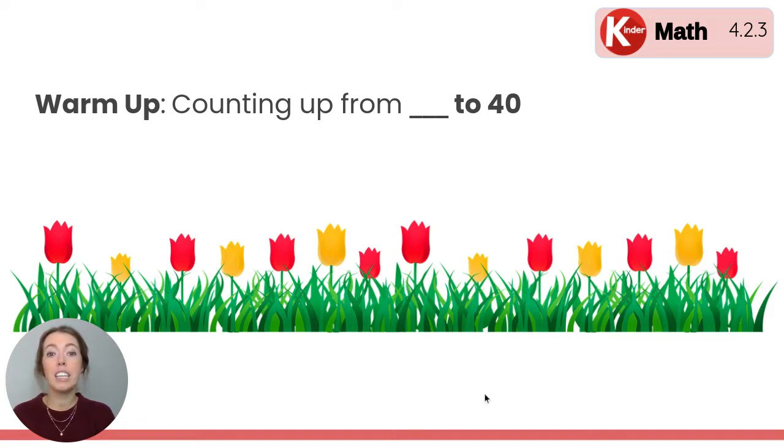There are fourteen flowers here. Now let's put that number in our head, fourteen, and we're going to count up from fourteen all the way to forty. So we're starting with fourteen, and then if you add one more, we would say fifteen.